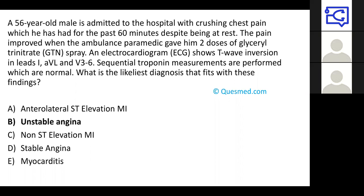This question is trying to elicit the differences between different types of acute coronary syndrome. The key differentiations are whether there's evidence of cardiac damage, represented by troponin — which in this case is normal. If there's no change in troponin, it is unlikely to be a myocardial infarction. It's not a STEMI because there's no ST elevation. It's not an NSTEMI because the troponin is normal. And it's unlikely to be myocarditis, which would present with fever and other features. With pain at rest and ECG changes but no cardiac damage, the answer is unstable angina.